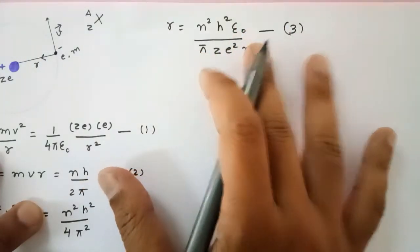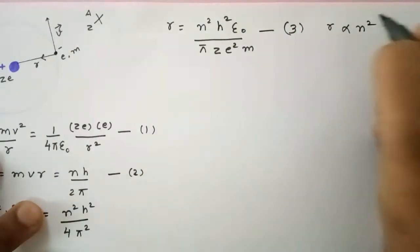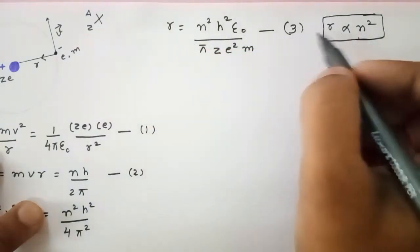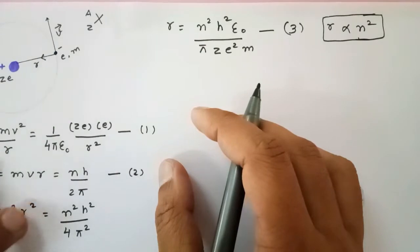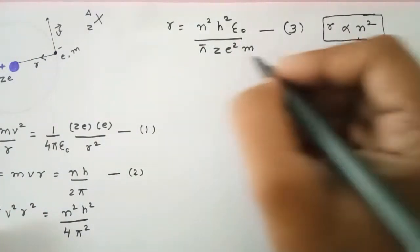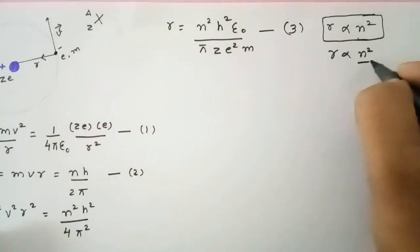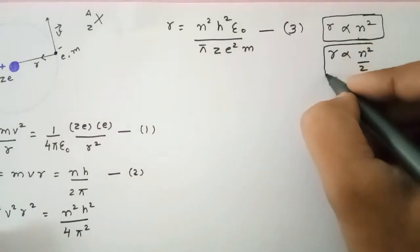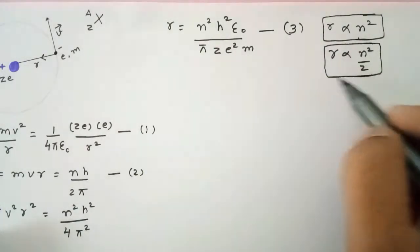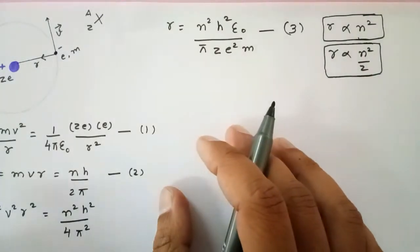Rearranging gives us Equation 3: r = n²h²ε₀ / (π·Z·e²·m). This is a very important expression. For a given atom where Z is constant, the radius is proportional to n². When comparing different atoms, r is proportional to n²/Z.